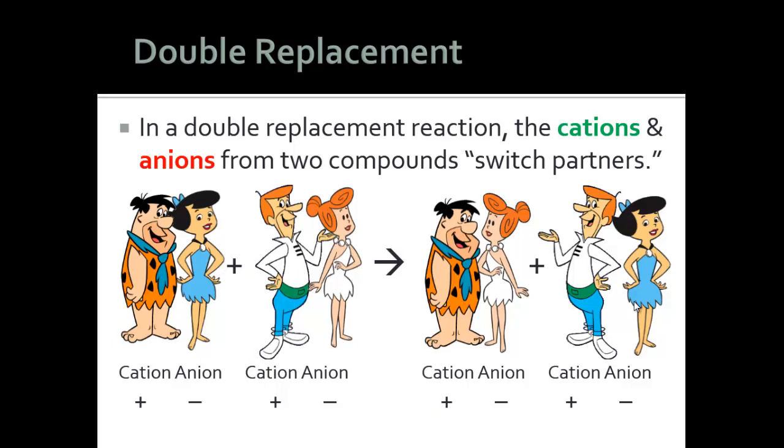Cations and anions have to go together. You can't put two cations together because they have to be opposite in charges in order to attract and make a compound. Otherwise they would repel.